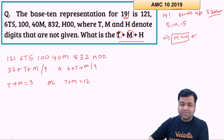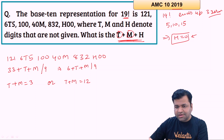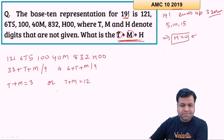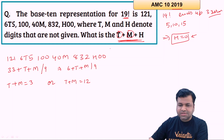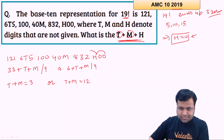Since h is 0, t plus m plus h effectively means t plus m. Now let's find one more relation between t and m using the divisibility rule of 11. That rule says the difference between the sum of digits at odd places and the sum of digits at even places must be divisible by 11. Let's calculate the sum of digits at odd places: 0 + h + 3 + m + 4 + 0 + 5 + 6 + 2.